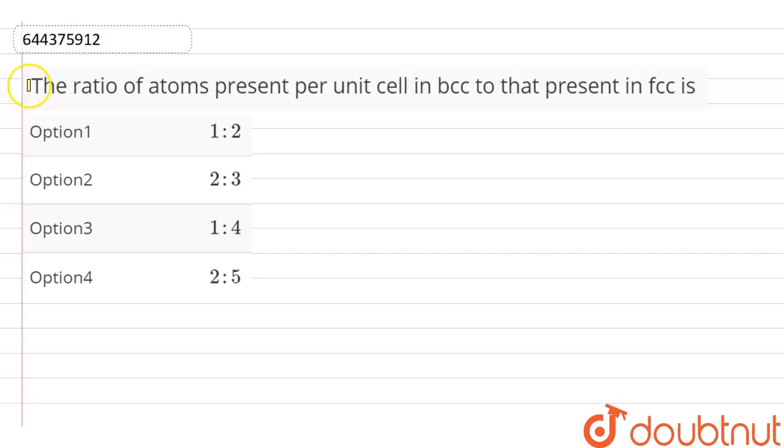Here is the question: What is the ratio of atoms present per unit cell in BCC to that present in FCC? Option 1: 1:2. Option 2: 2:3. Option 3: 1:4. Option 4: 2:5.